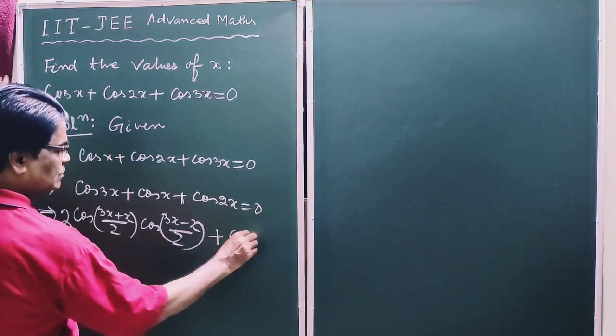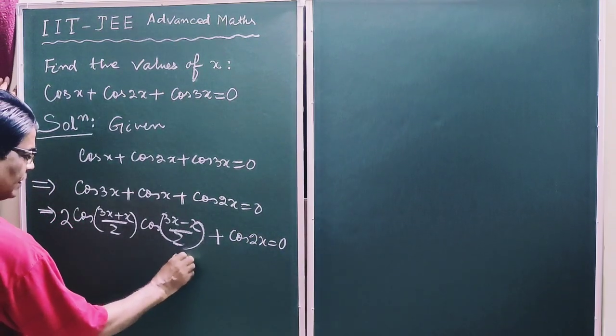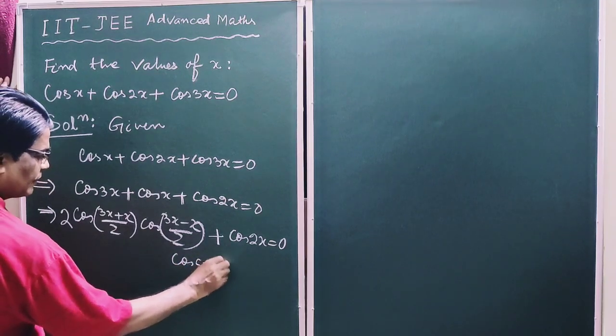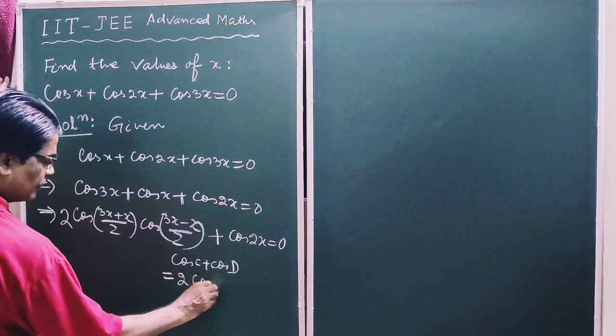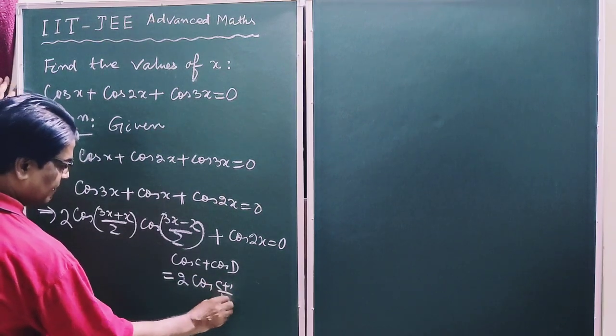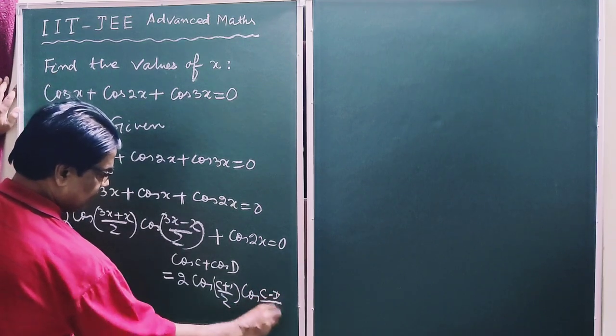This gives cos 2x is equal to 0. So we have applied the formula cos c plus cos d equals 2 cos c plus d by 2 times cos c minus d by 2.